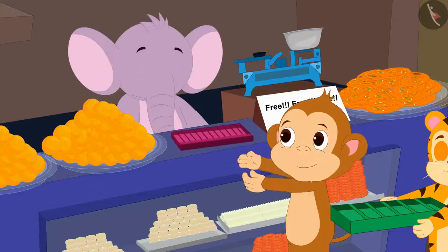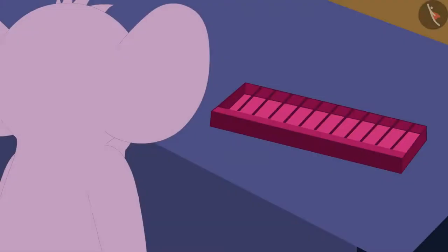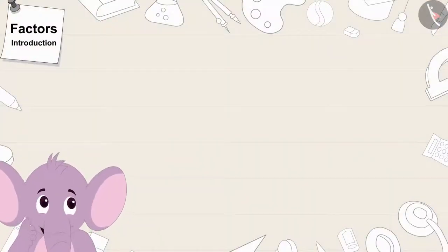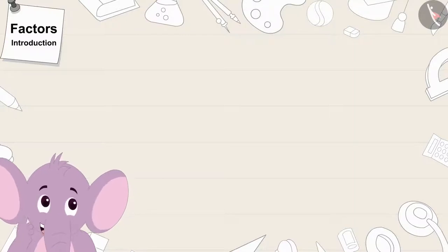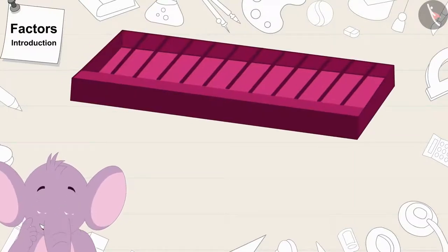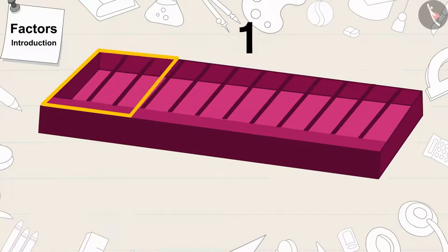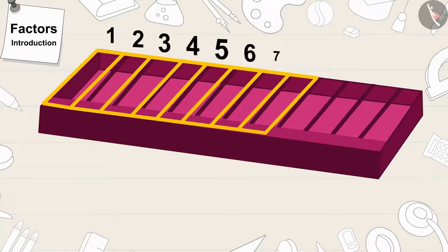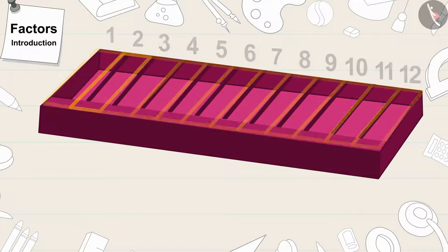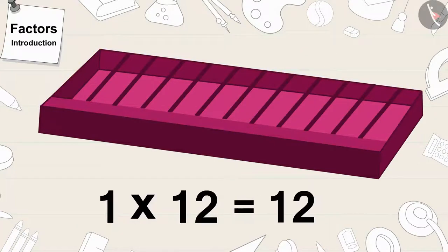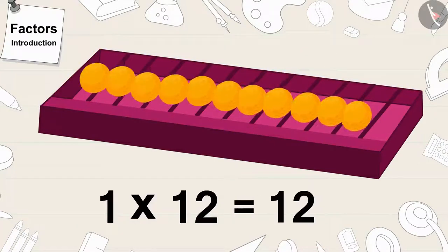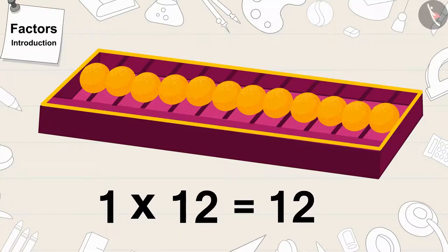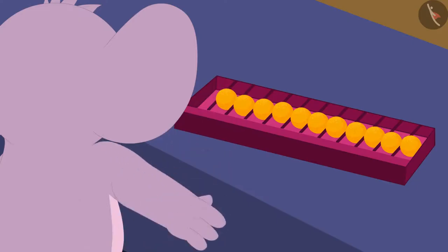Babban first gave his box to Appu. There are 12 slots in a line in Babban's box. Appu is thinking, will 12 laddus fit in Babban's box? There is one line with 12 slots. That means 1 times 12. 12 laddus will surely fit in Babban's box. Appu filled laddus in Babban's box.